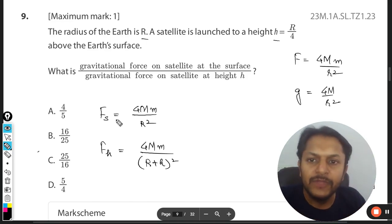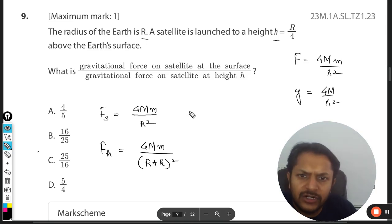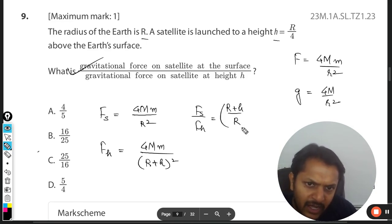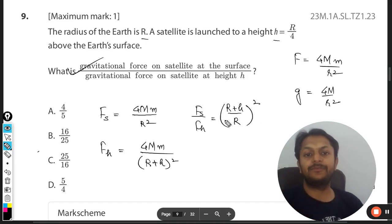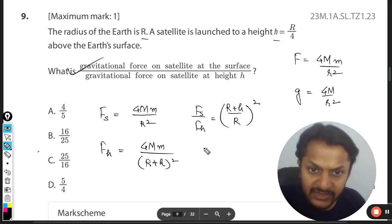We want to take the ratio here, so F_s/F_h is what we want. It comes out to be equal to (R+h)²/R². Now h is given as R/4, so plug in the value.